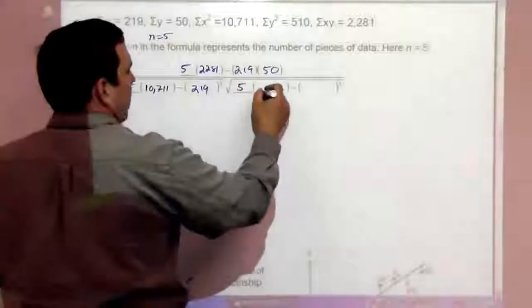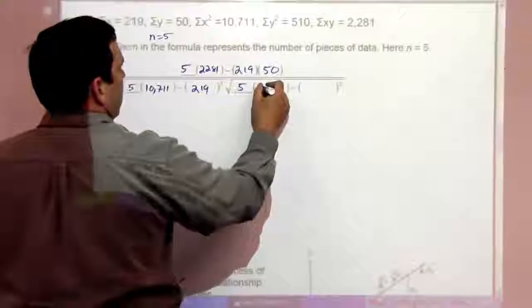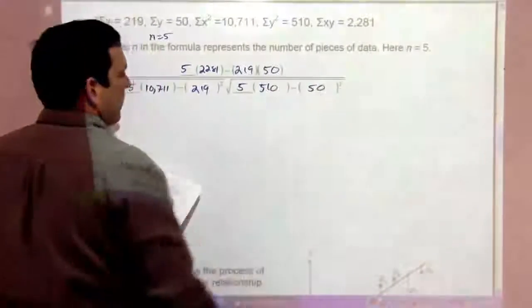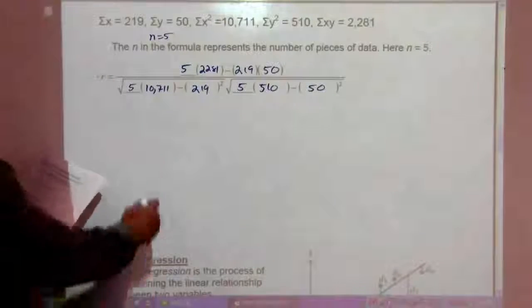Then we have 5, again, sum of the Y squareds. That's 5, 10. Then, the sum of the Y's are going to be 50 squared.